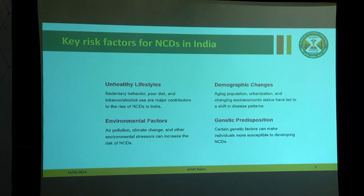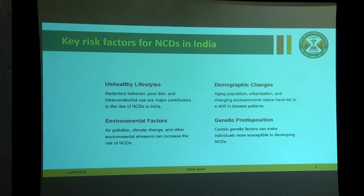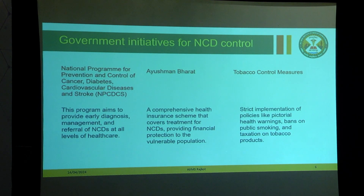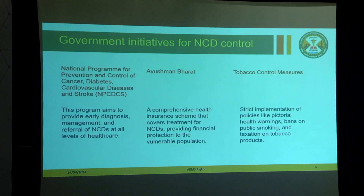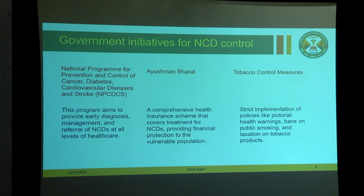The key risk factors include lifestyle, demographic changes, aging, environmental conditions, geographical factors, and genetics. When we talk about non-communicable diseases, the major causes of death are cardiovascular disease, followed by cancer, then chronic respiratory disease, and then diabetes. The government has launched the NPCDCS program — National Programme for Prevention and Control of Cancer, Diabetes, Cardiovascular Disease, and Stroke.